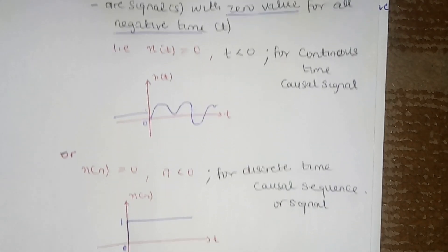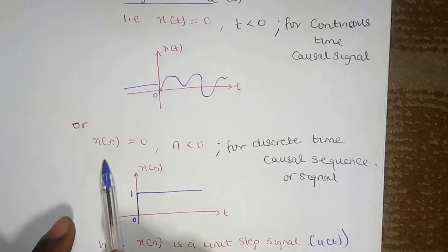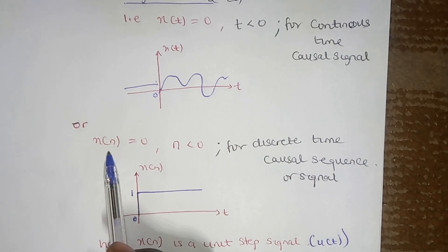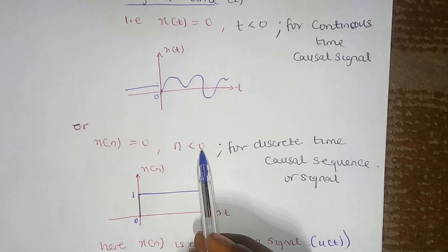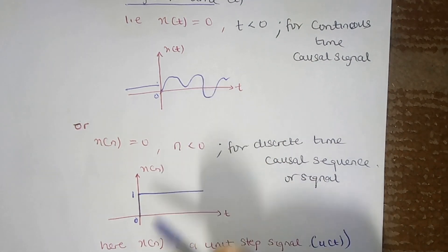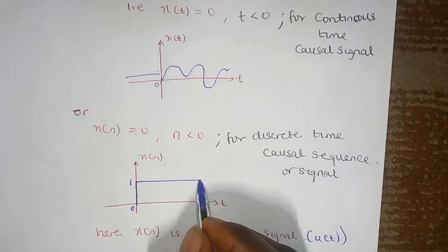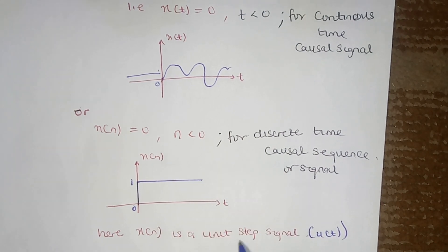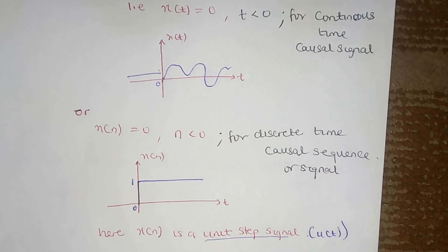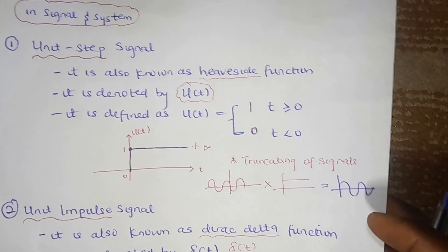If it is discrete, instead of writing x(t), we write x(n). And for x(n), it is n less than zero that has no value — it always has value on the positive axis. An example of a discrete time causal sequence is the unit step. We discussed previously in our video about the unit step signal and the importance of impulse response.